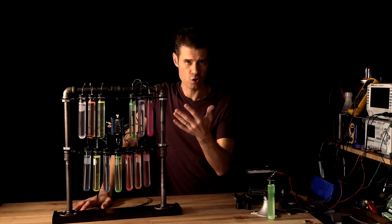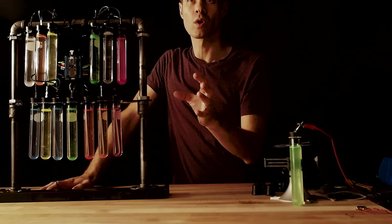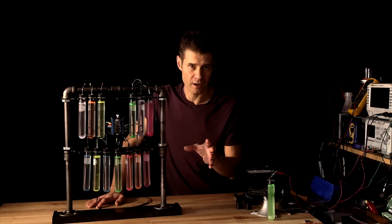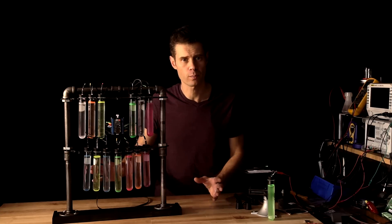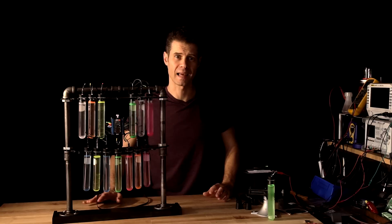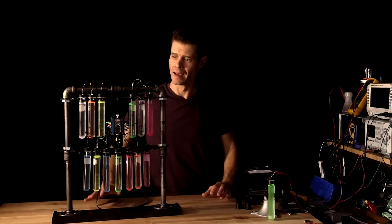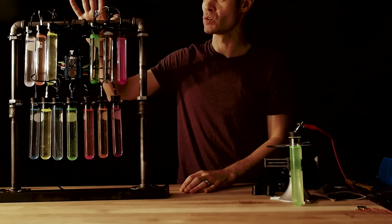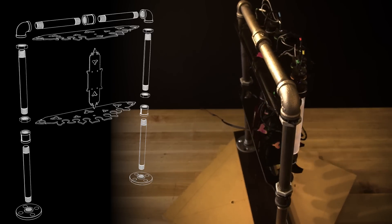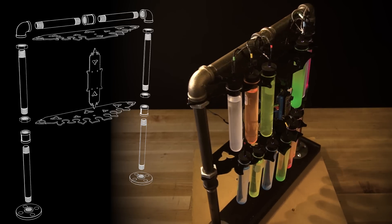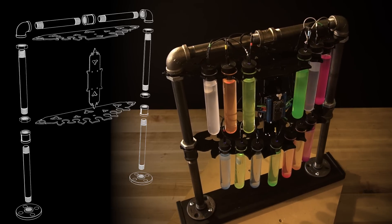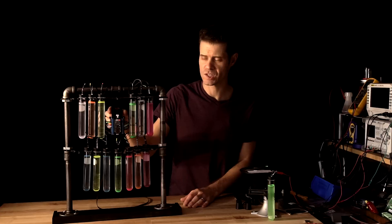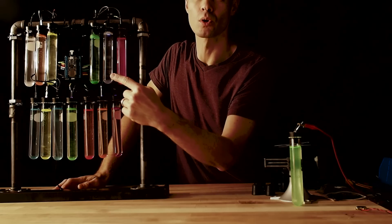Once you've got your test tubes glowing, the next thing you want to do is put them in a rack of some kind. Now you can get some pretty nice wooden ones or plastic ones online or at a laboratory or chemistry supply. I decided to build this industrial spooky gothic one using half inch black iron pipe fittings and some laser cut acrylic stands for the tube holders, as well as this little support in the middle that holds the microcontroller.